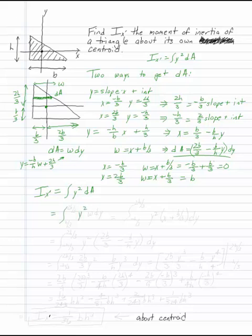I have the integral of y squared times w dy, but my limits of integration are h over 3 to 2h over 3, not 0 to h. So if I plug that in here, I have y squared times 2b over 3 minus b over h times y dy.